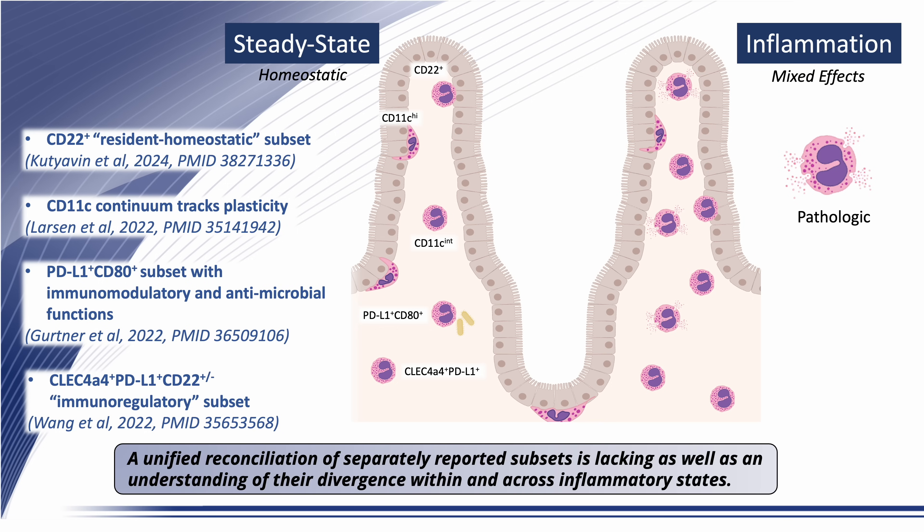A unified reconciliation of these separately reported subsets is lacking. Also lacking is an understanding of how local inflammation shapes these phenotypes, a comprehensive understanding of their divergence within and across inflammatory states, and ultimately their relationship, if any, to homeostatic versus pathologic potentials of intestinal eosinophils. These are gaps we sought to bridge in this study.